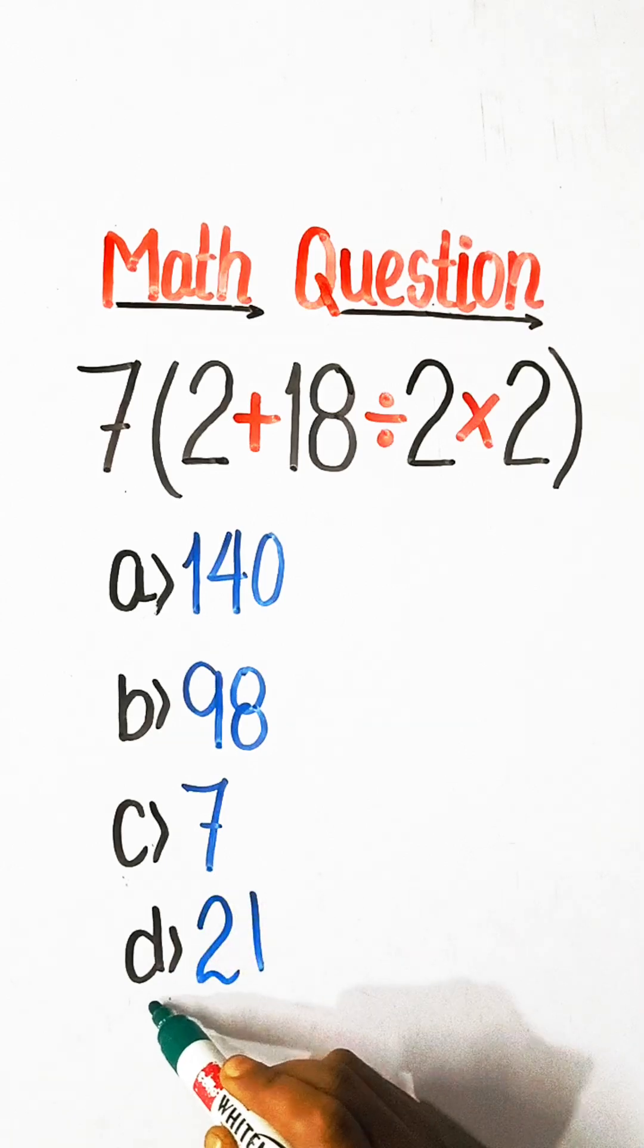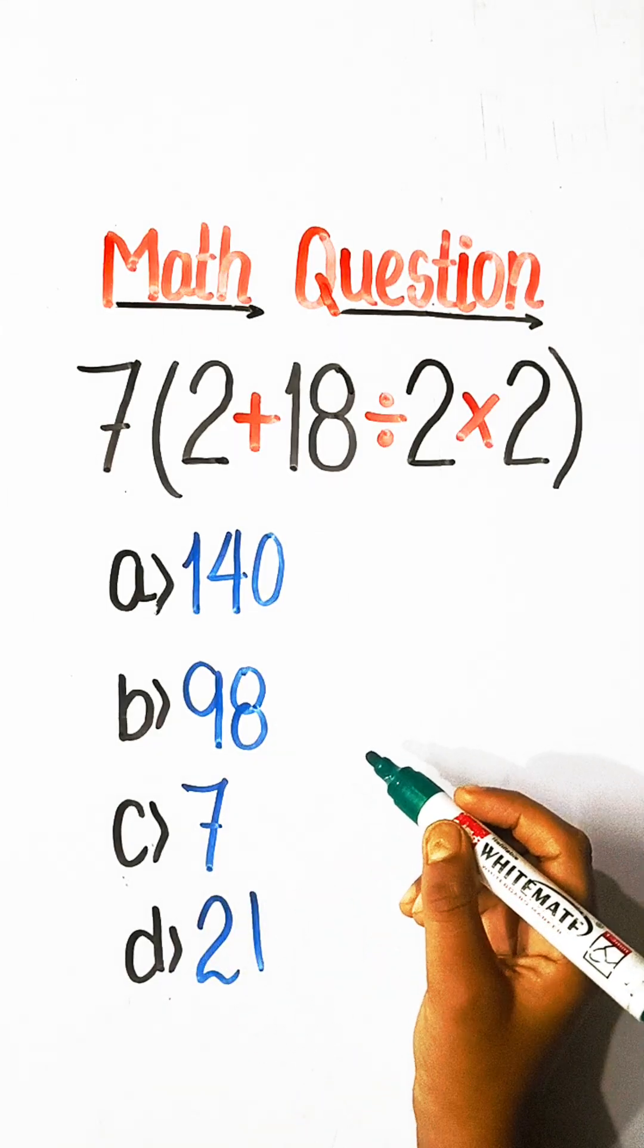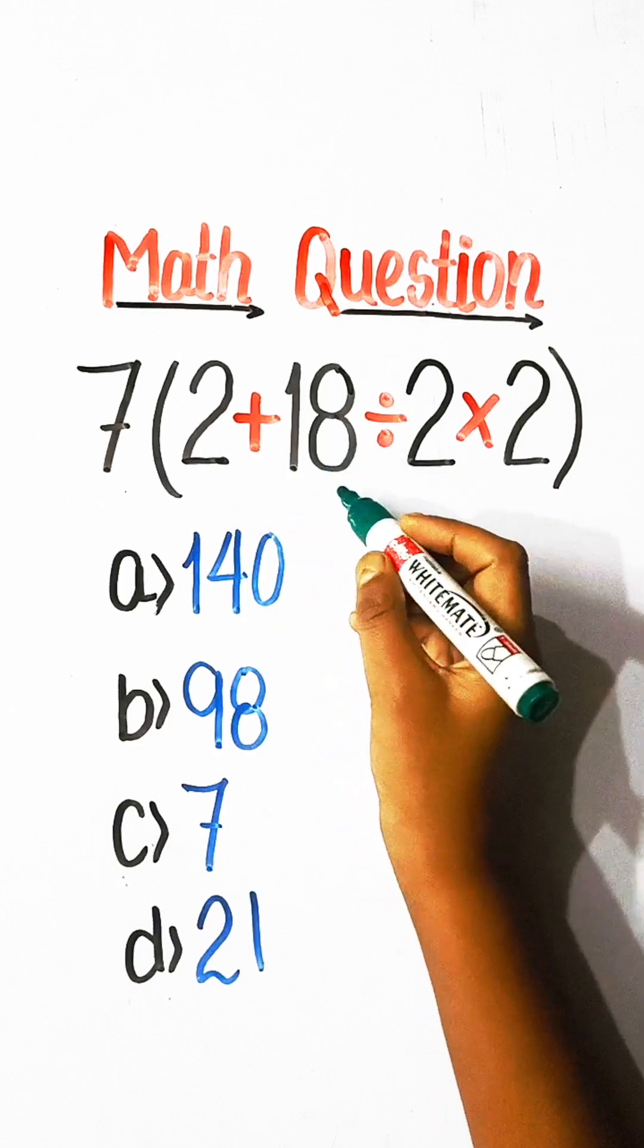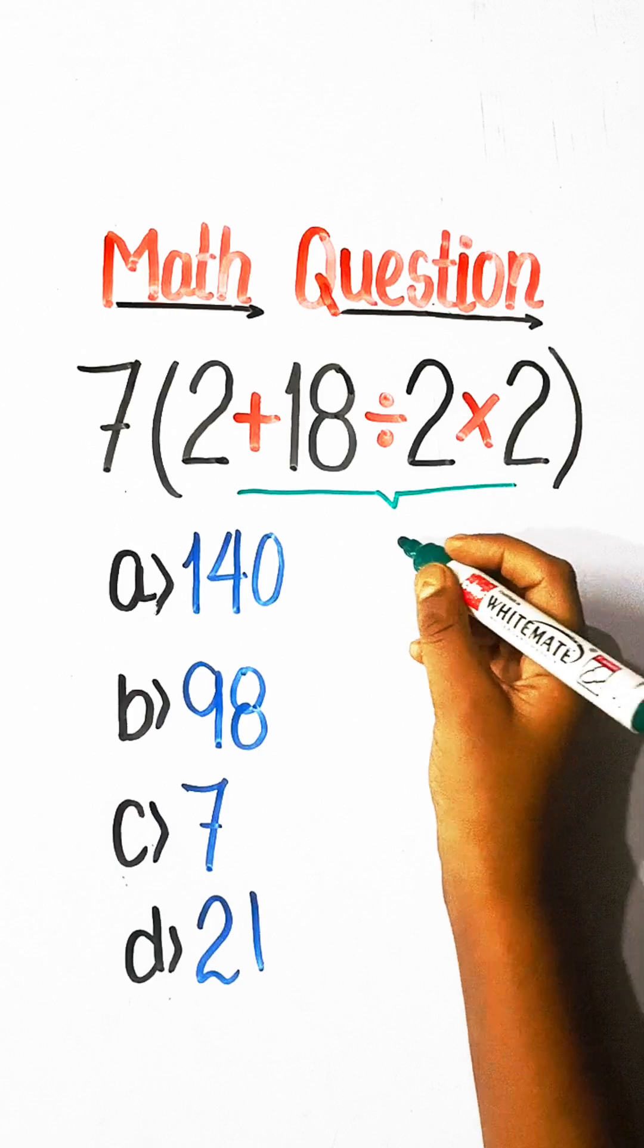C: 7, Option D: 21. So let's solve this. We have to solve the bracket part first.